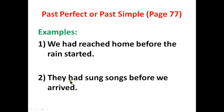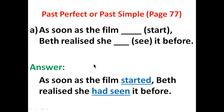Another example: 'They had sung songs before we arrived.' If I say 'before we had arrived,' it will be wrong — there cannot be two 'had' in one sentence of past perfect. Now we are going to do our exercise.